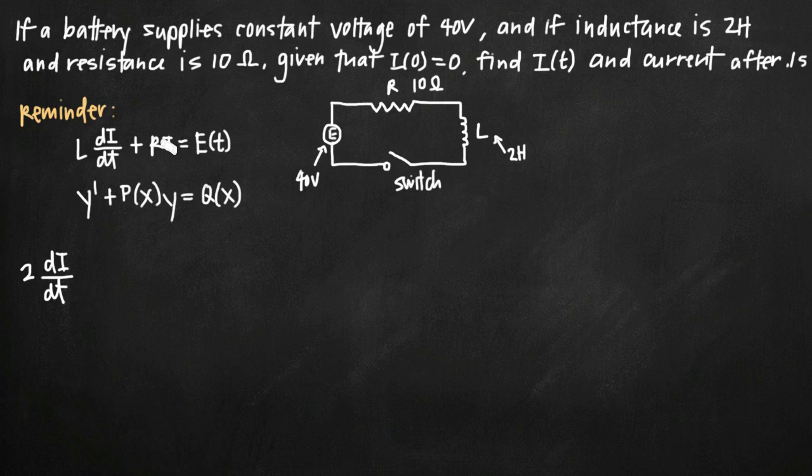Then we have plus Ri. Well, we already know that R is 10 ohms, so we'll plug in 10 for R, leaving the i. And then we'll go ahead and plug in 40 for E(t) because E(t) models voltage and we know that a battery is supplying a constant voltage of 40. So we'll plug 40 in for E(t).